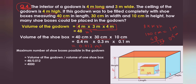The maximum number of shoe boxes possible in the godown equals the volume of the godown divided by the volume of one shoe box: 48 ÷ 0.012. To remove the decimal, multiply both by 1,000: 48,000 ÷ 12 = 4,000.